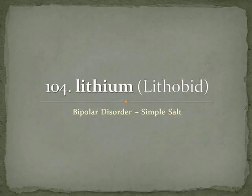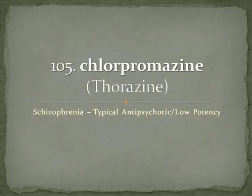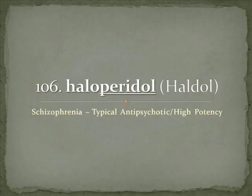Chlorpromazine is Thorazine, and this is for schizophrenia. It is a typical antipsychotic — also synonymous with first-generation antipsychotic — and it is low potency. Low potency means increased sedation but likely lower extrapyramidal symptoms. As opposed to the next one, haloperidol, which is Haldol — also for schizophrenia and a typical antipsychotic — and it is high potency, meaning less sedation and increased extrapyramidal symptoms relative to chlorpromazine.